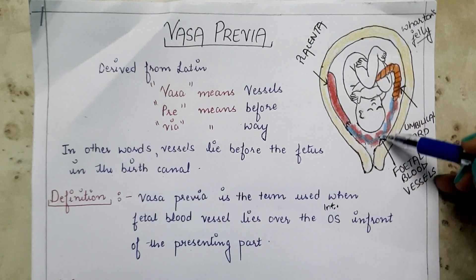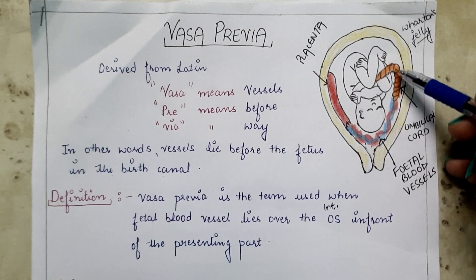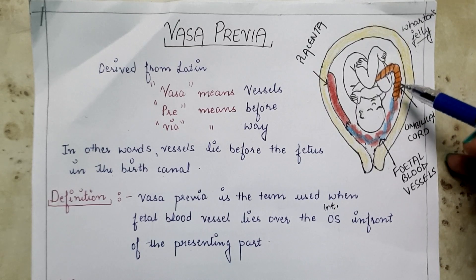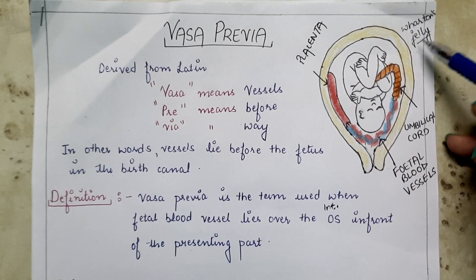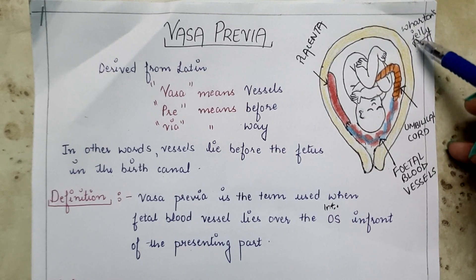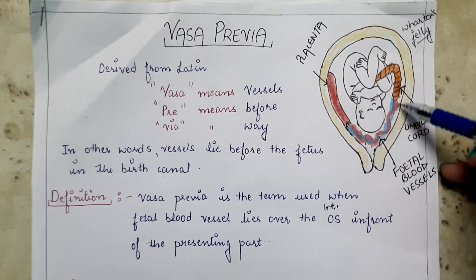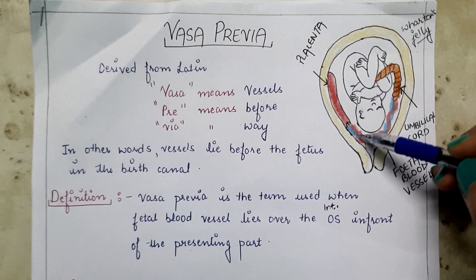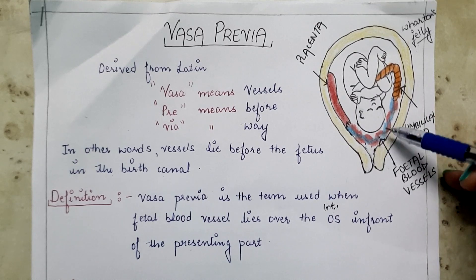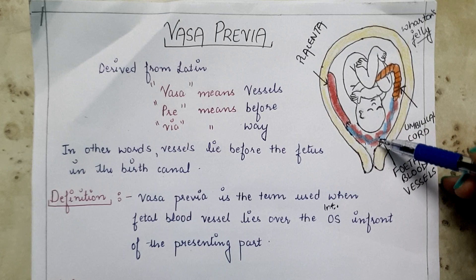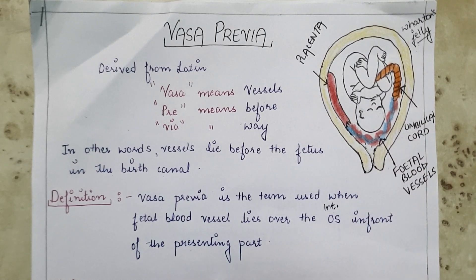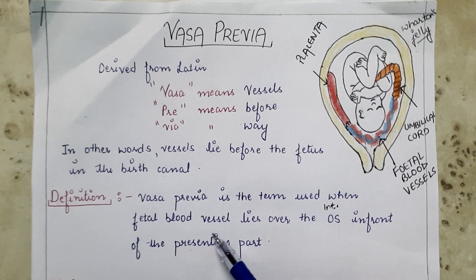These are fetal blood vessels, and this is the umbilical cord. The umbilical cord contains the fetal blood vessels, which are protected by Wharton's jelly — a gelatinous substance that protects the fetal blood vessels from rupture. But here, Wharton's jelly is not present, so these blood vessels are actually prone to or at risk of rupture.